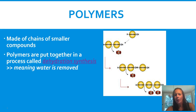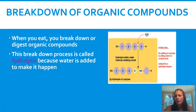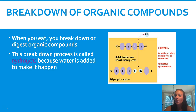A key term you need to know is dehydration synthesis. Dehydration is the loss of water, and synthesis is when you're putting something together. So dehydration synthesis means that when smaller units are put together to form larger units, water is lost or removed. Another term is hydrolysis — hydro meaning water — but this time water is added to the bond, which breaks it down. This is actually how your digestion process works. If you don't have enough water in your body, you'll have trouble with digestion because water is needed to break down these macromolecules.